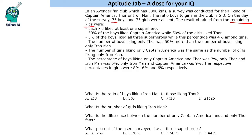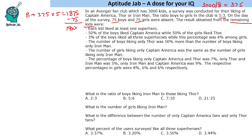We will exclude the absent kids. 3000 kids, boys to girls is 5:3, so 8 parts — 3000 divided by 8 is 375. Number of boys is 375 × 5 = 1875, minus 75 absent, so 1800 boys to be surveyed. Total surveyed is 2850 because 150 students are absent, and girls surveyed is 1050.